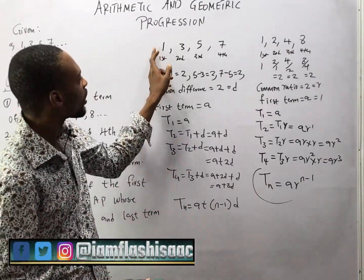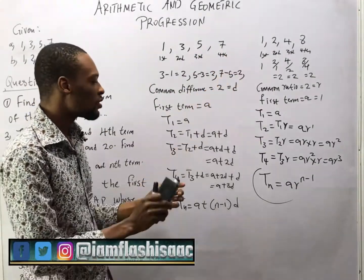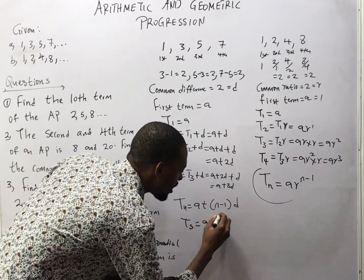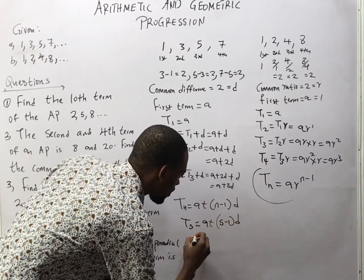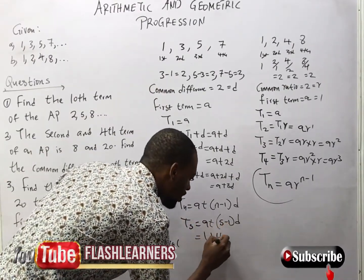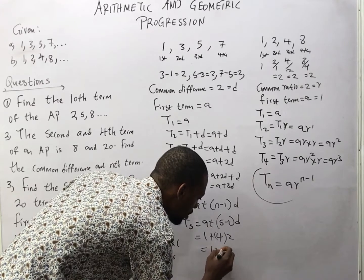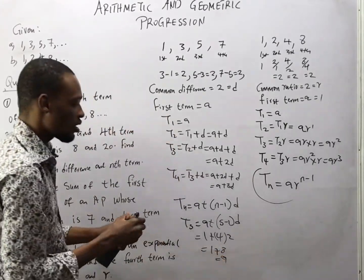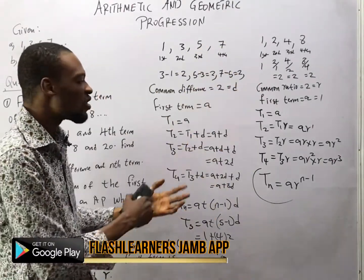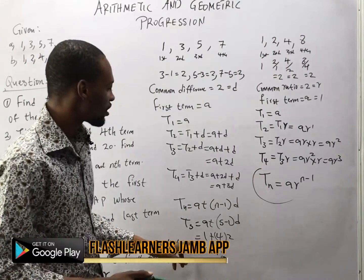So in the sequence 1, 3, 5, 7, the fifth term is simply 9. Let's use the formula to confirm. T5 = A + (n − 1)D = 1 + (5 − 1) × 2 = 1 + 4 × 2 = 1 + 8 = 9. We are correct. With this formula, I can say look for the 20th term or the 100th term and you'll get the value without manually adding.